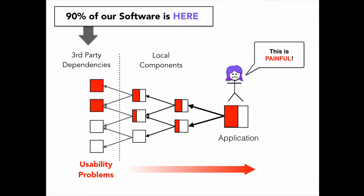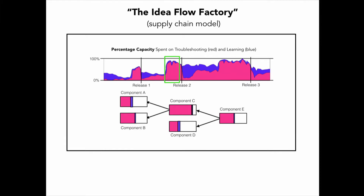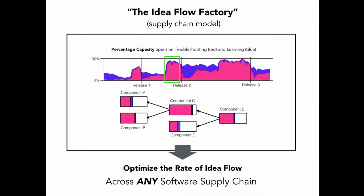Once I started looking at the problem this way, we started aggregating the data according to where it fit into the software supply chain. I put together this idea flow factory supply chain model so you could look at how these effects affect different aspects of the supply chain and trickle downstream. This gives us a way to optimize the rate of idea flow across any software supply chain, whether within our organization or across our industry. My background is in process control and supply chain optimization, so once I figured out how to do the metaphorical mapping, a lot of things just clicked together.